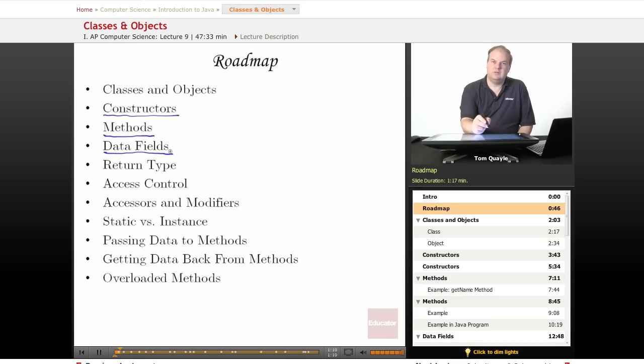We'll look at data fields that belong to classes and objects. We'll look at the return type of a method. We'll talk about access control—that is, how you can control who has access to the various pieces of your classes. Accessors and modifiers are specific types of methods. We'll talk about static and instance as they relate to both methods and data fields. We will look at passing data to methods and then getting data back from methods in return. And finally, we'll talk about something known as overloaded methods.